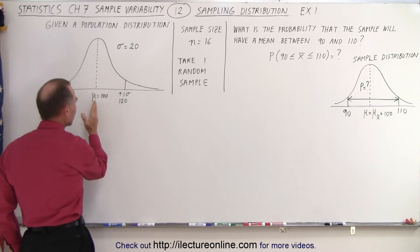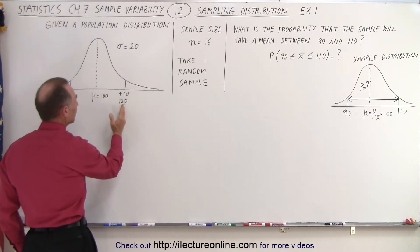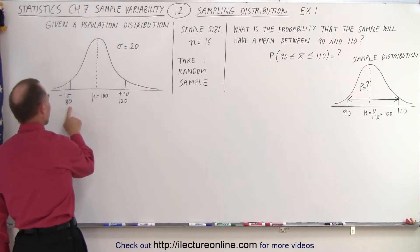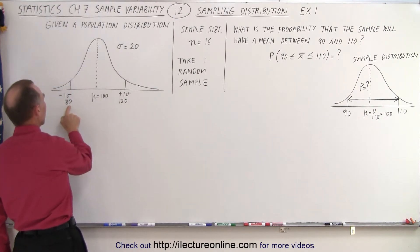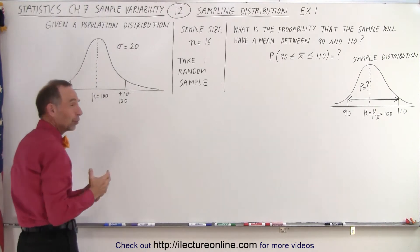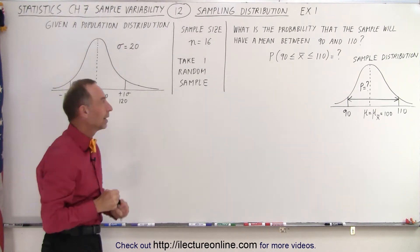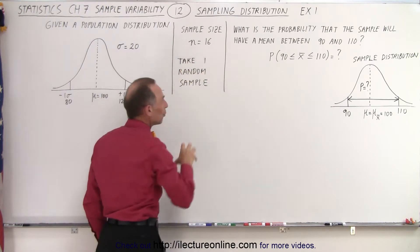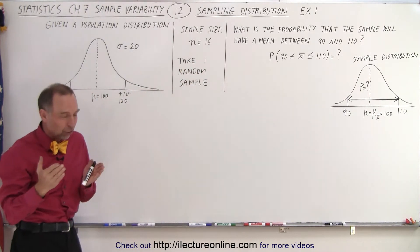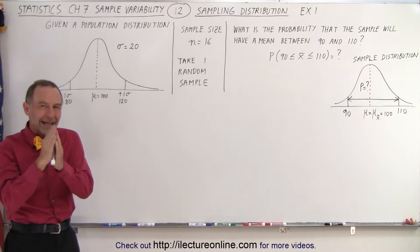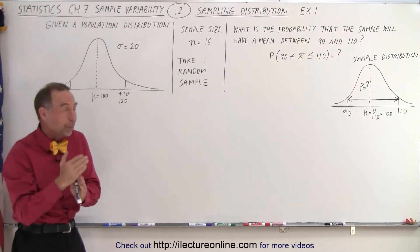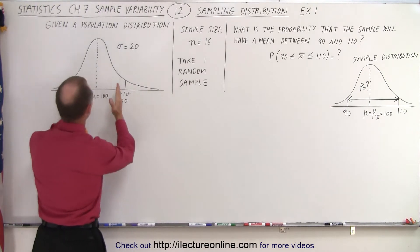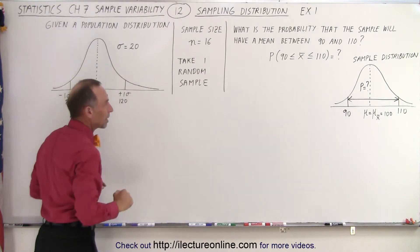So from the mean plus one standard deviation we're up at 120, and from the mean minus one standard deviation we're down to 80. Now we're going to take a sample — let's say the sample size is equal to 16. The question is: what is the probability that the mean of the sample will fall between 90 and 110?